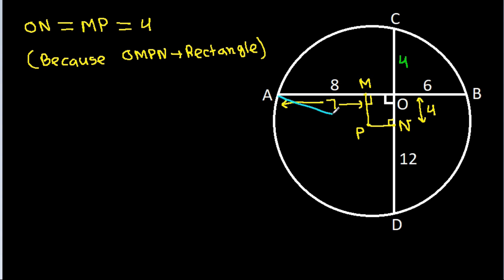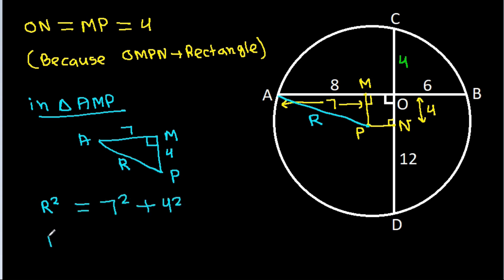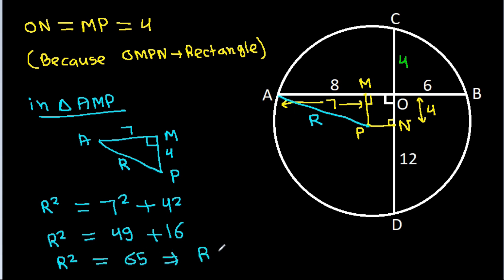Now, if we join AP, then AP is the radius. In triangle AMP, AM is 7, MP is 4, and this angle is 90 degrees, and AP is the radius. So radius squared equals 7 squared plus 4 squared, giving R squared equals 49 plus 16, and R squared is 65. So R equals square root of 65.